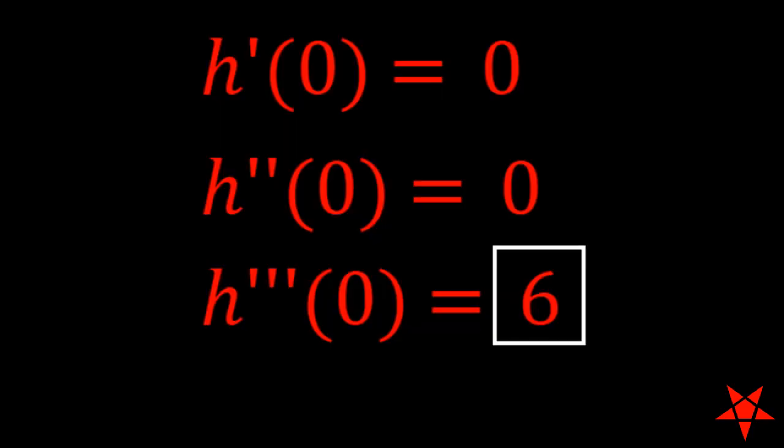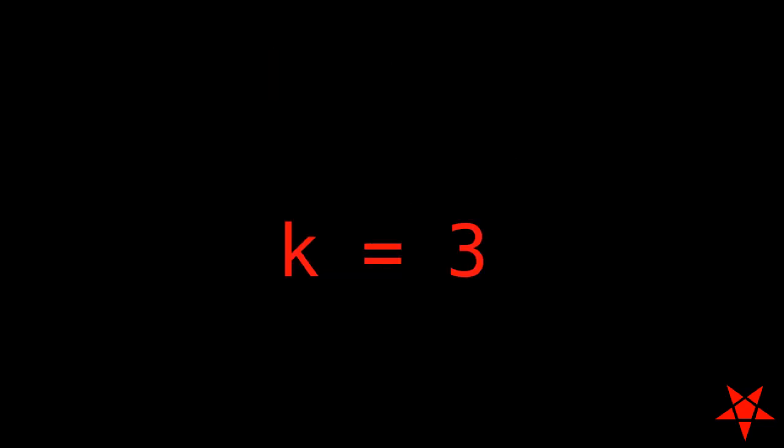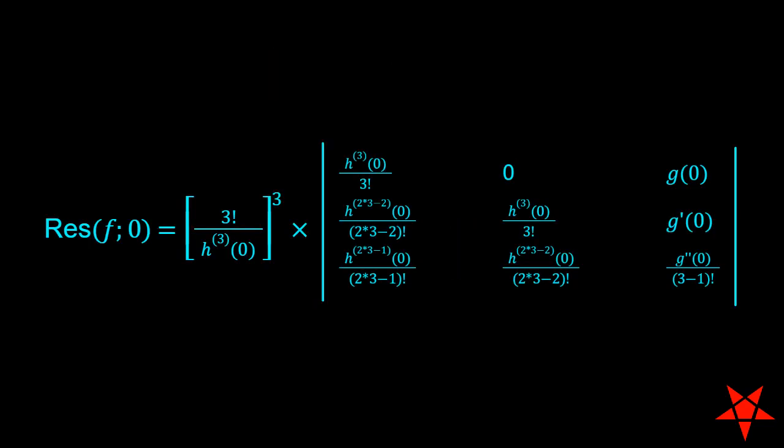Since all of the derivatives of h of z below the third derivative are 0, we will set up the formula found on page 250 with k equal to 3. Just a bunch of derivatives and a 3 by 3 determinant, and we're out of here.